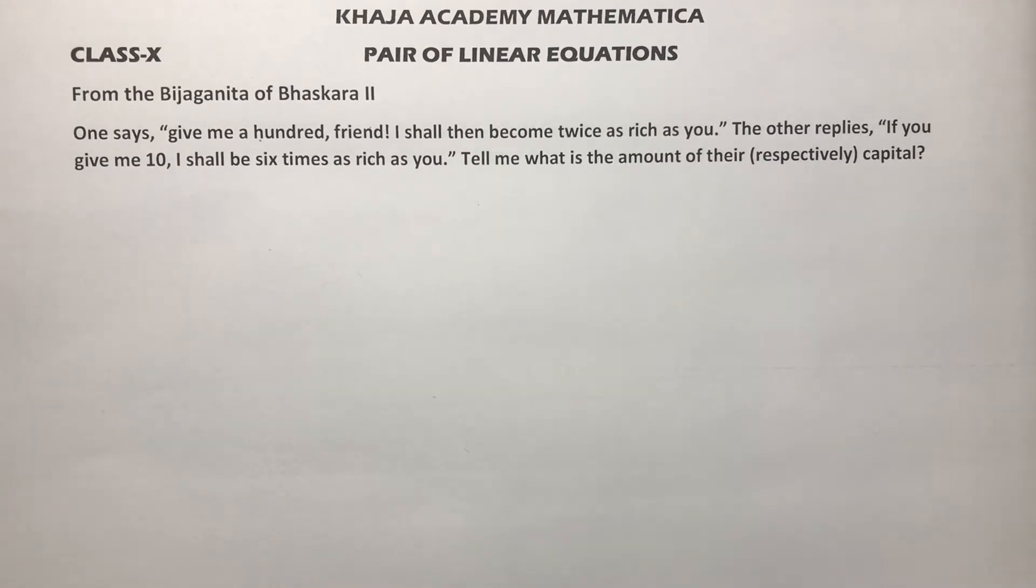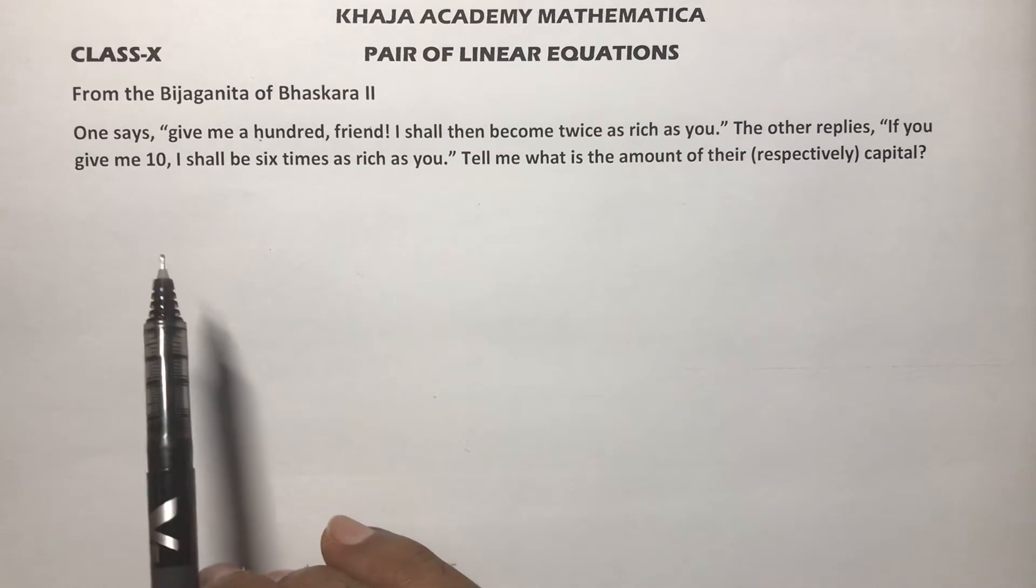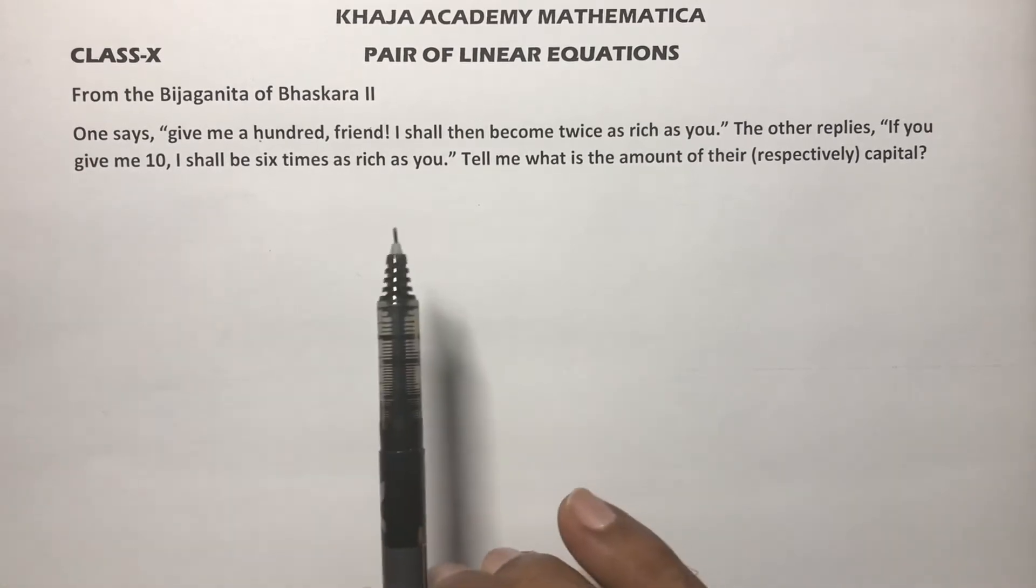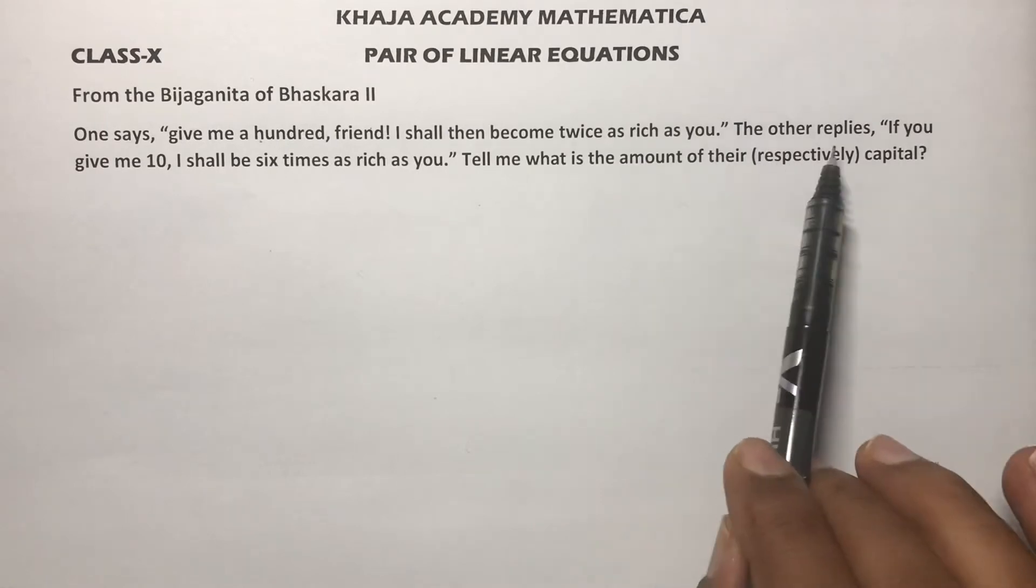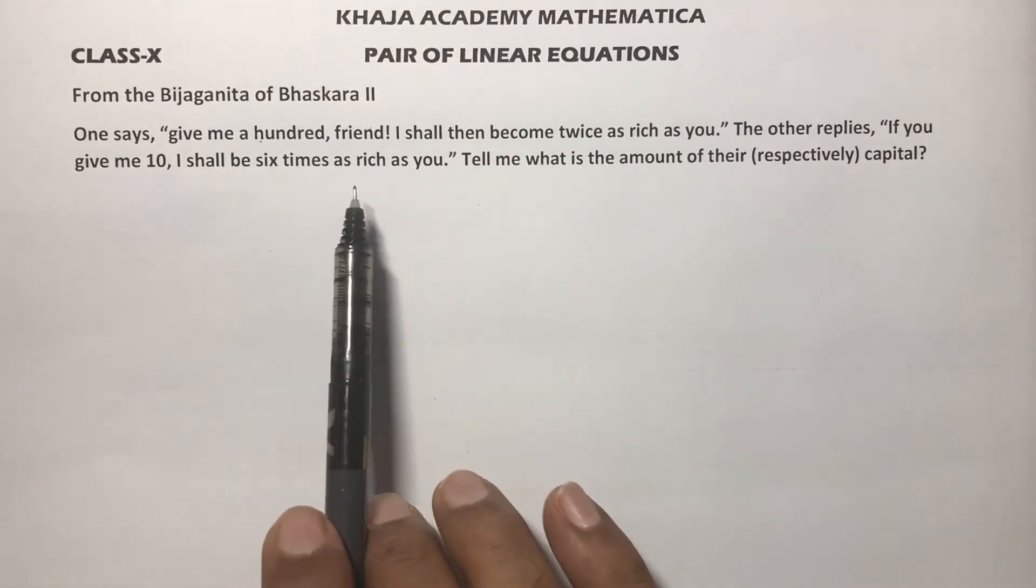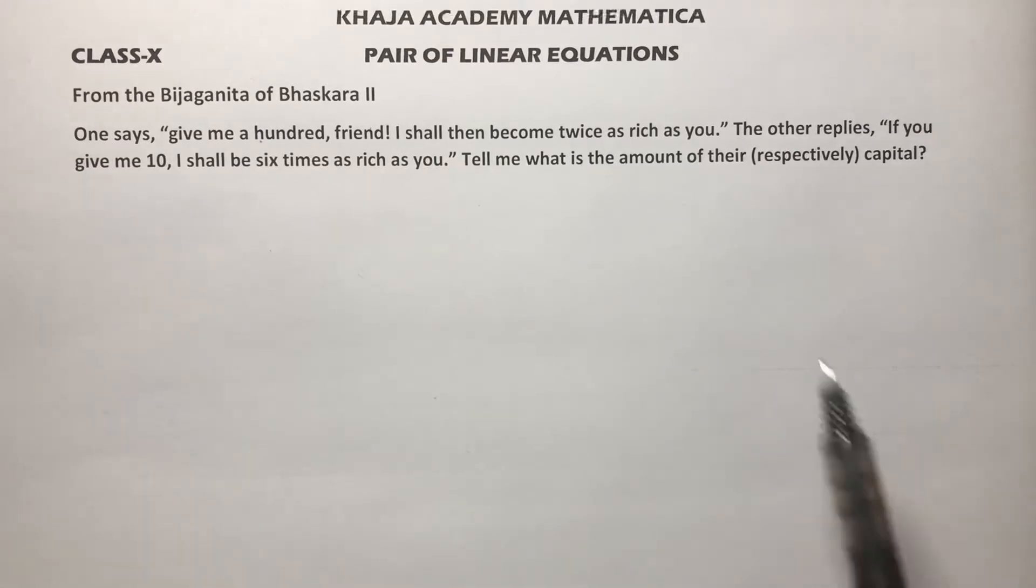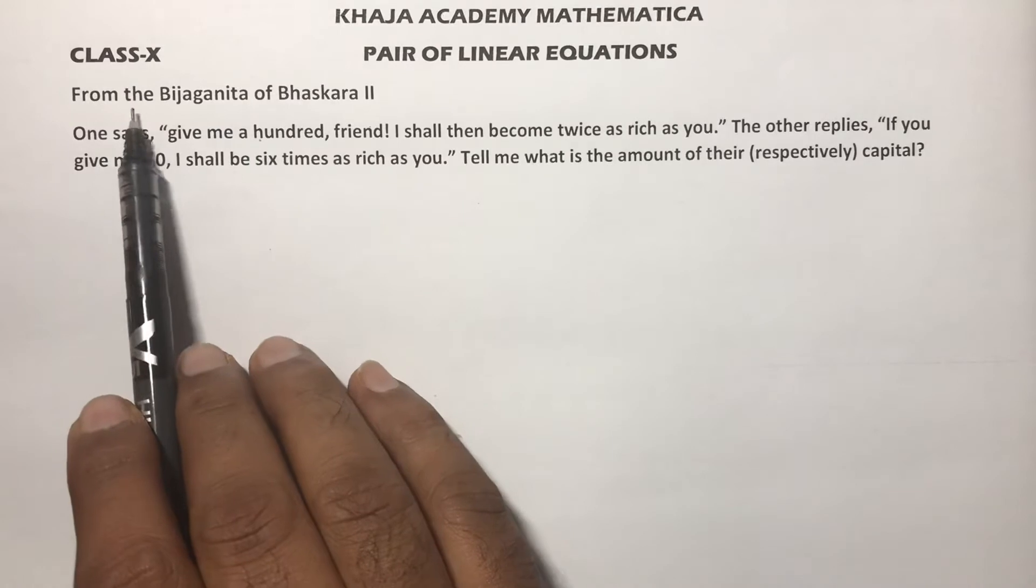Class 10th important problem from pair of linear equations. One says, give me a hundred friend, I shall then become twice as rich as you. The other replies, if you give me 10, I shall be six times as rich as you. Tell me what is the amount of their capital.